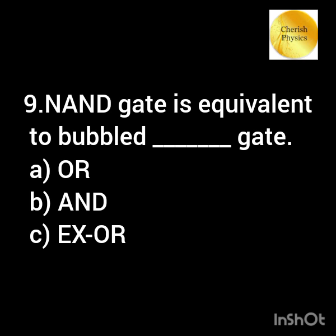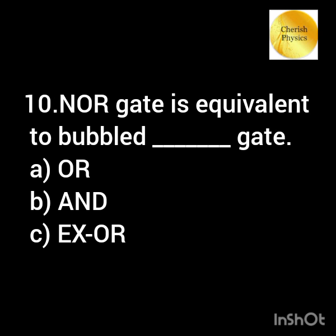NAND gate is equivalent to a bubbled OR gate. NOR gate is equivalent to a bubbled AND gate.